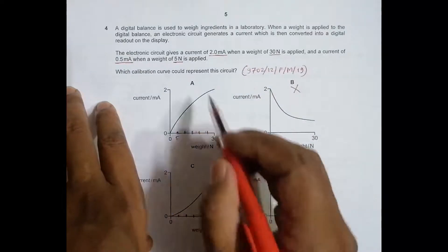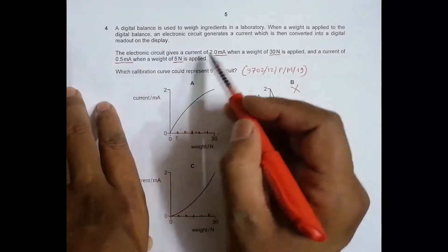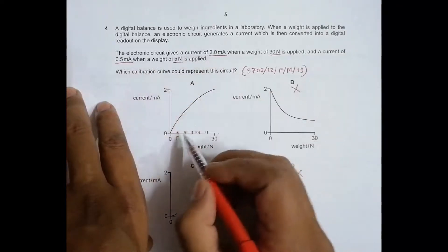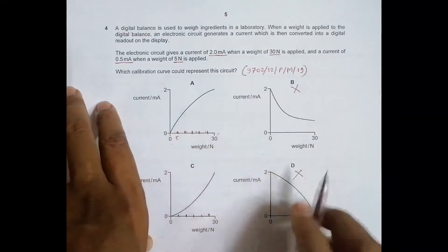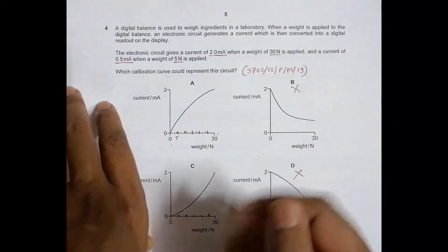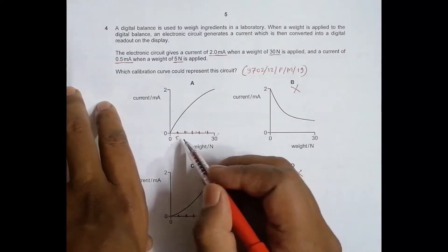So 5 Newtons is about 1/6th of 30. At 1/6th the current becomes 1/4th. So at 1/6th current should be 1/4th. That means the rise of current should be more rapid than the rise of weight between 0 to 5 Newtons.